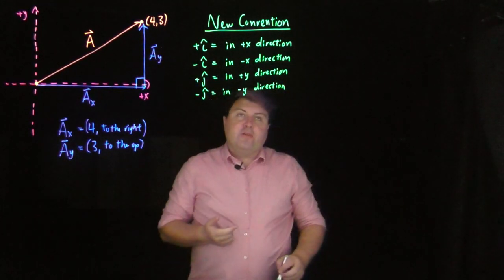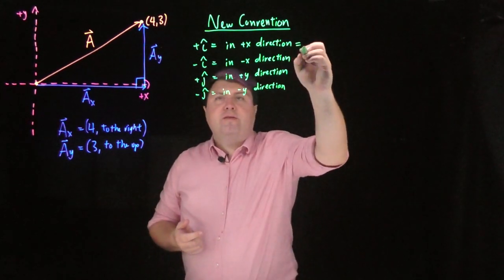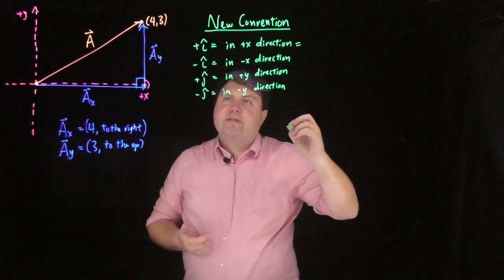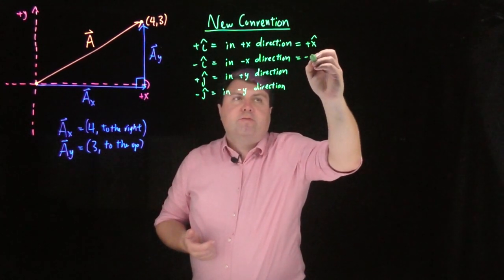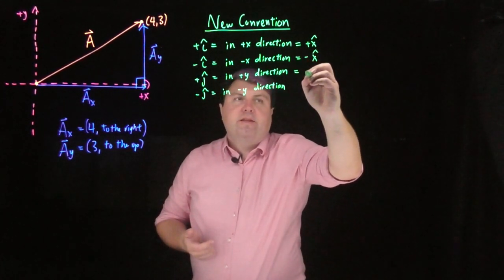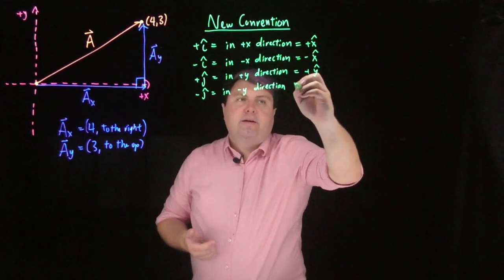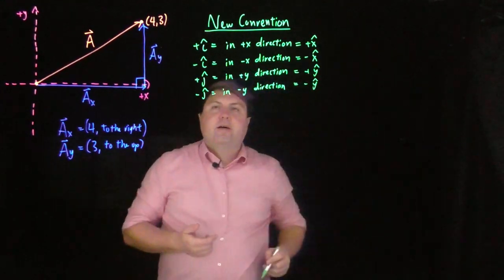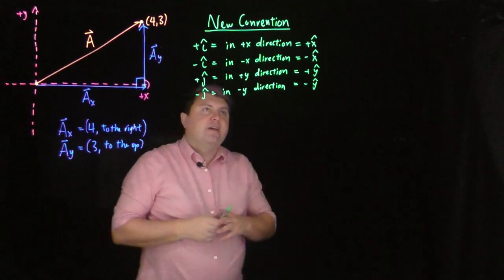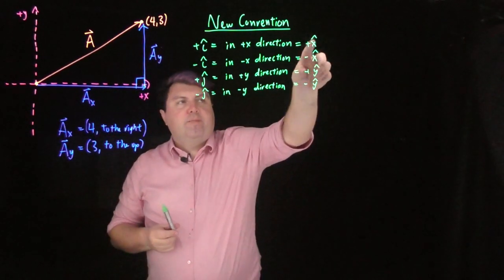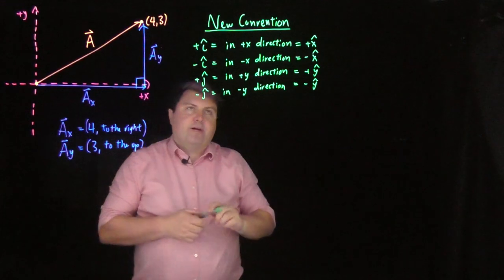And in fact, other courses might use a slightly different convention, where instead of i-hat they use plus x-hat. So this would be negative x-hat, and then this would be plus y-hat, this would be negative y-hat. For this course, and a lot of other physicists, we're going to use i-hats and j-hats, just so we're not confusing our variables x and y with directions.